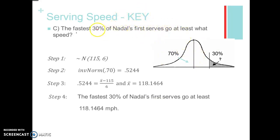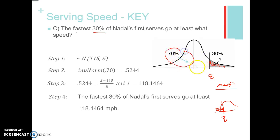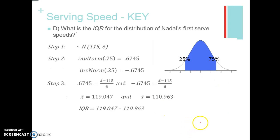This one's a little tricky. The fastest 30% go at least a certain speed. We want to know that Z score, but you cannot type in inverse norm of 30%. If you type in inverse norm of 0.30, that gives you the Z score corresponding to 30% below — not what we want. Always draw a picture. You want to type in inverse norm of 70%, because that's what's below your Z score. For the IQR, type in inverse norm of 25% for Q1 and inverse norm of 75% for Q3, then find what actual X values correspond to those Z scores.